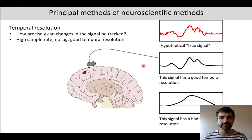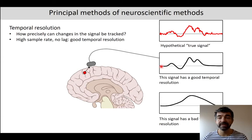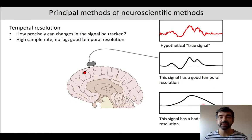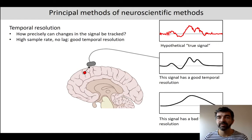Let's have a look at the temporal resolution of the neural signal. We have some hypothetical true signal that emerges at this red dot. With this method, the signal can actually be relatively well tracked — the time dynamics, the ups and downs — even though small deviations might not be tracked. This is a good temporal resolution because it resembles the shape of the original neural source. Here's an example of a method with bad temporal resolution: even though the onset resembles the true signal, it doesn't really track the dynamic changes in the neural signal over time.